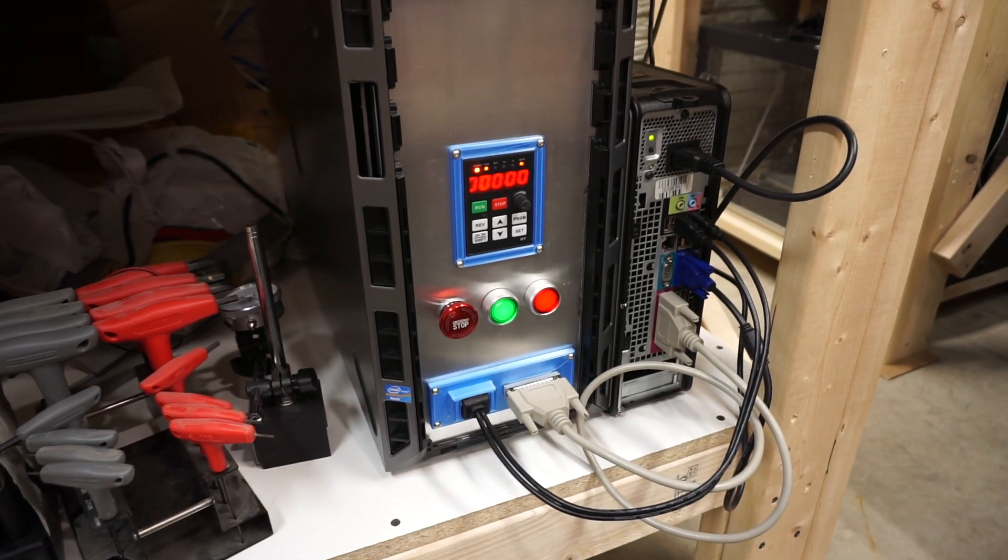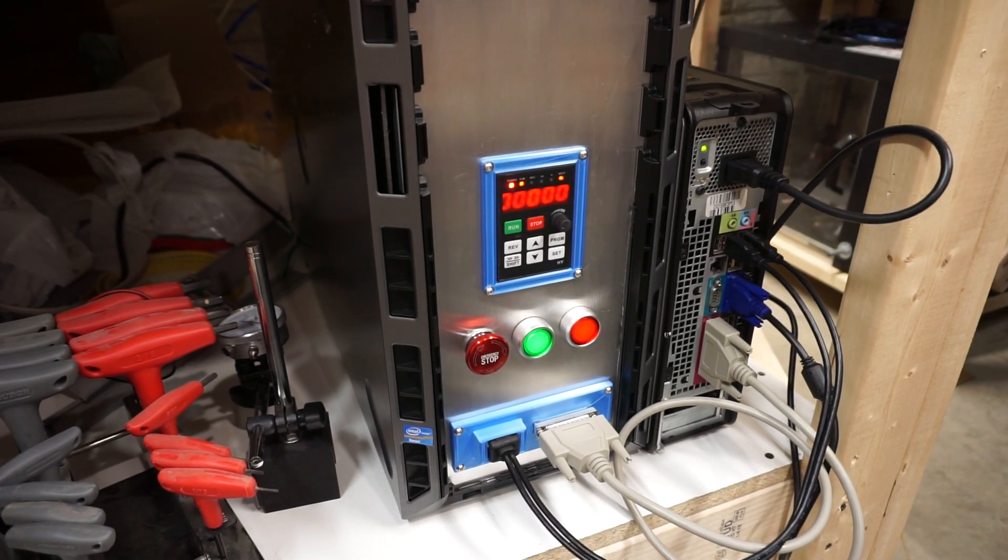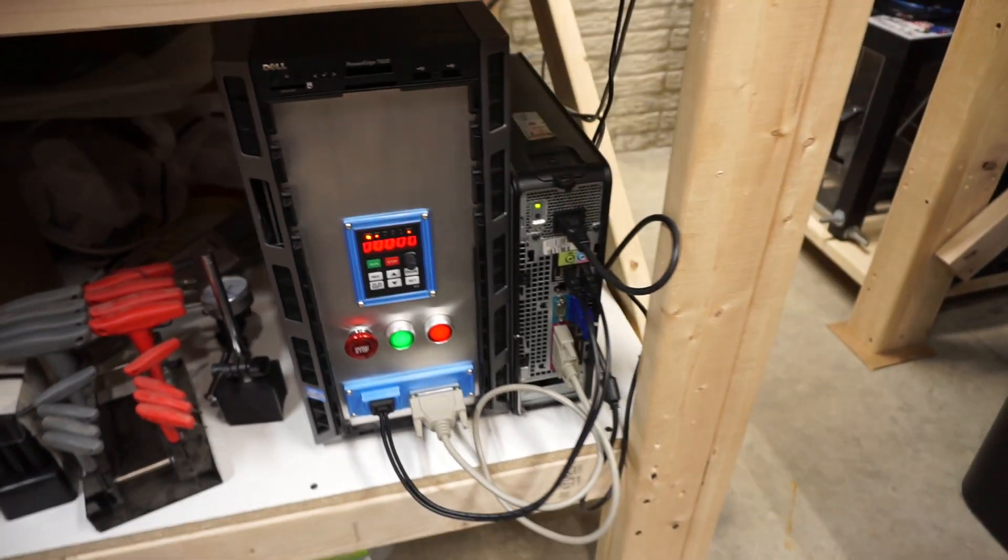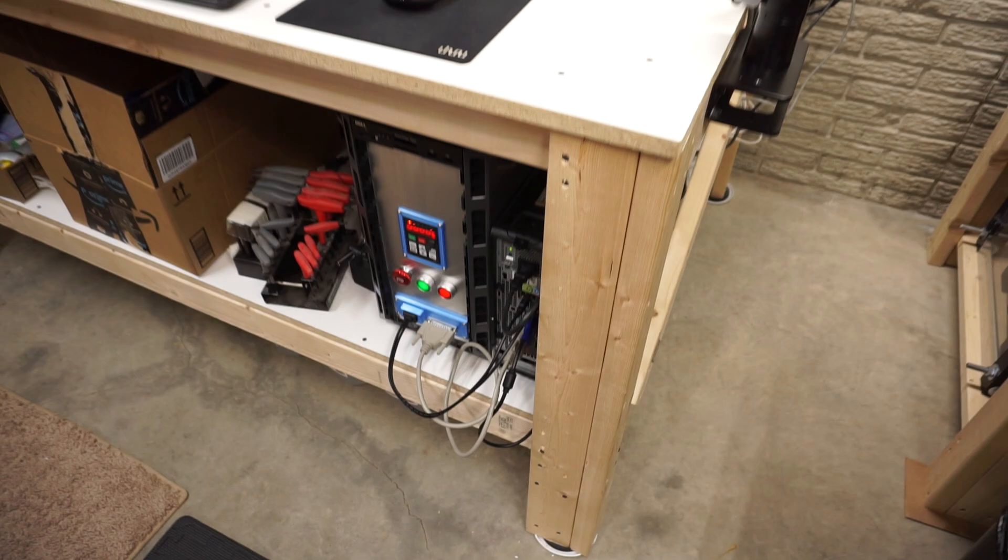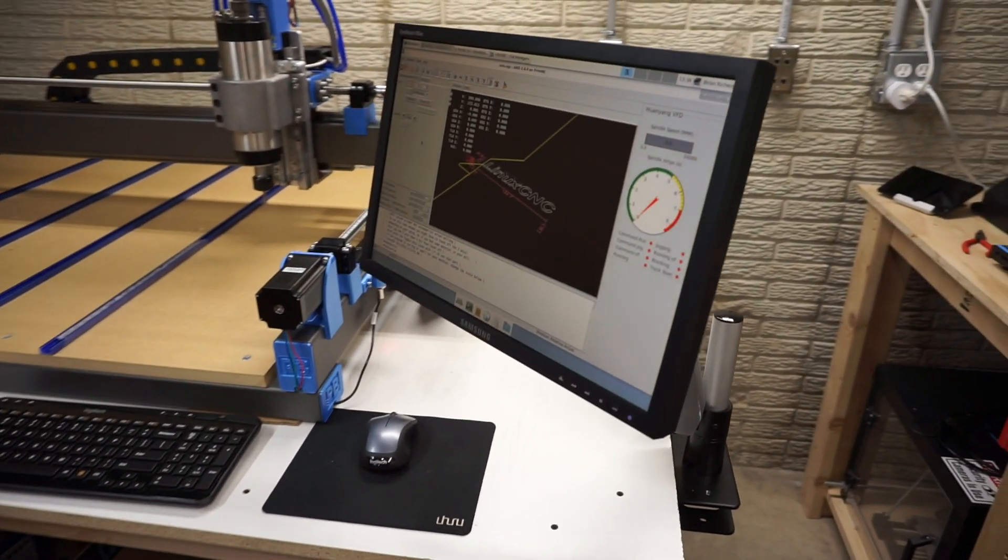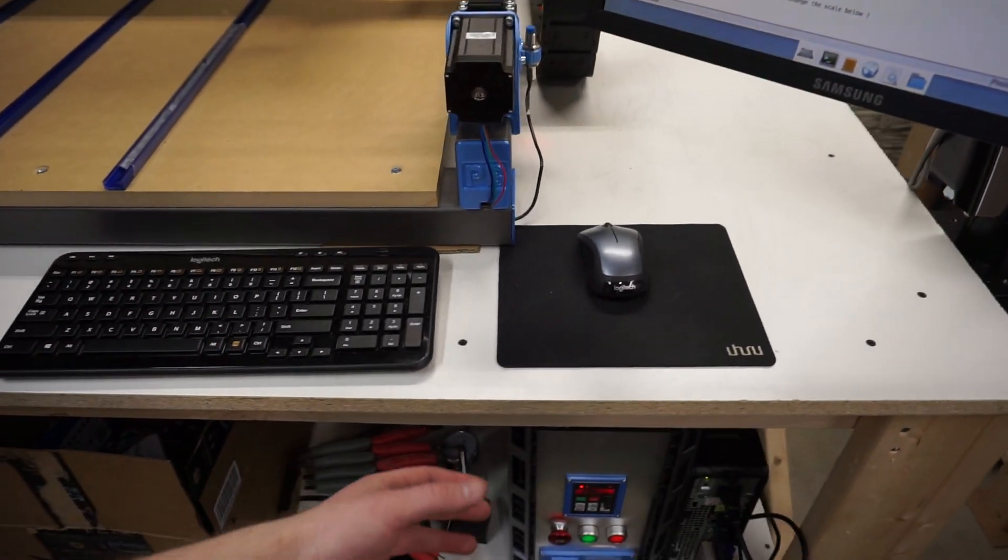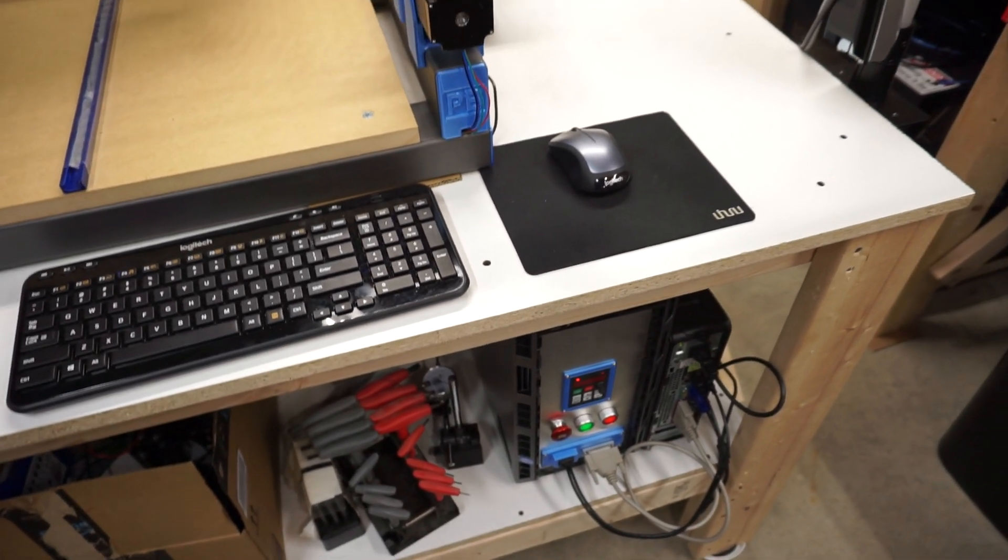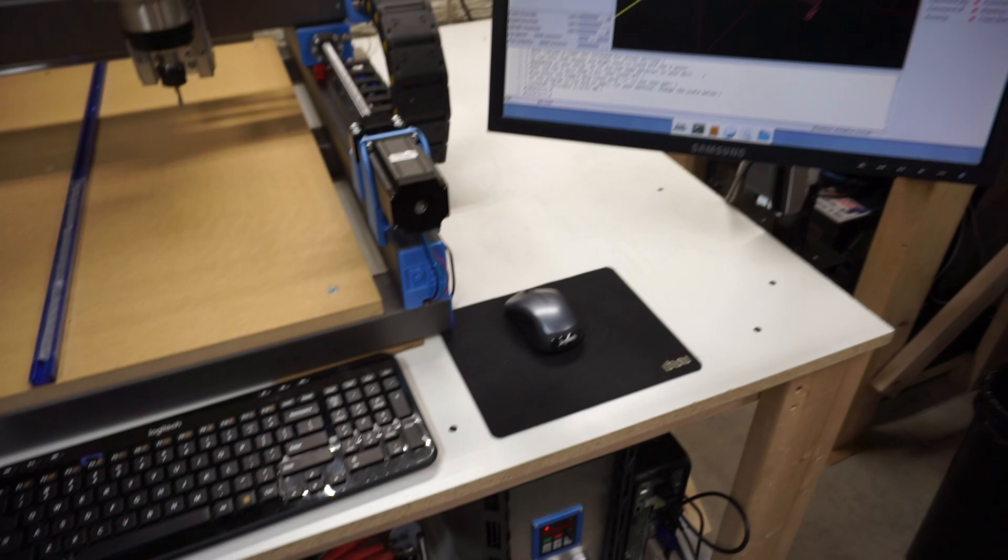I got the PC mounted there off to the right. You can kind of see. And then that runs up to the monitor. When I build the enclosure I'll probably have just a little tray out the front here that holds the keyboard and the mouse. And then I got to get my Xbox controller working with LinuxCNC yet.